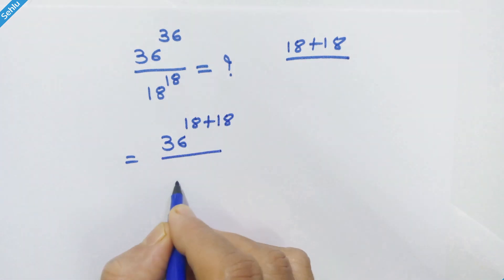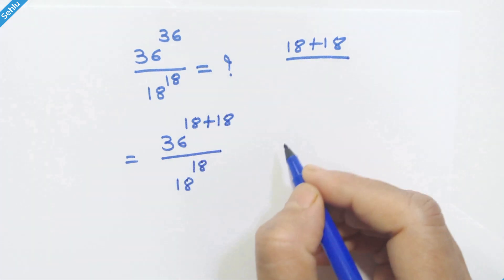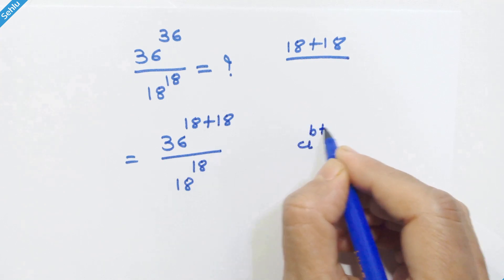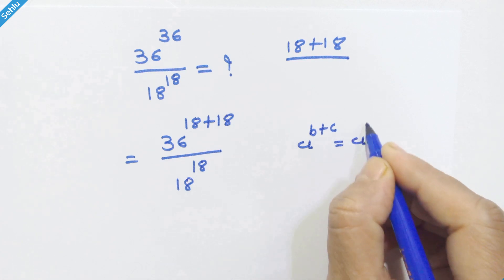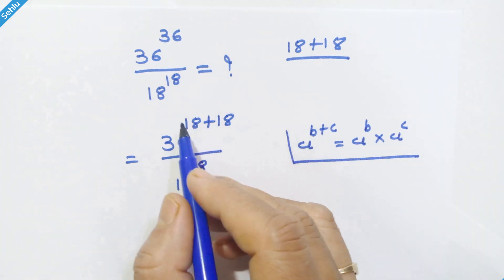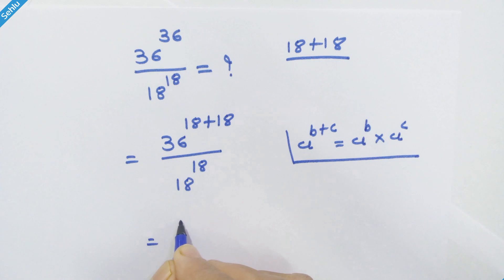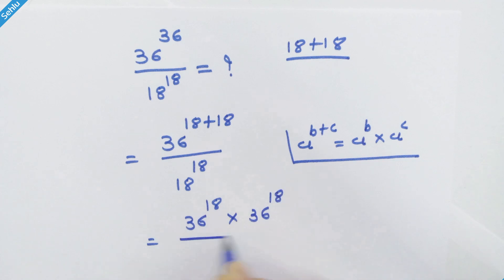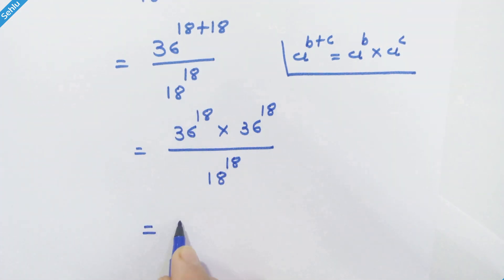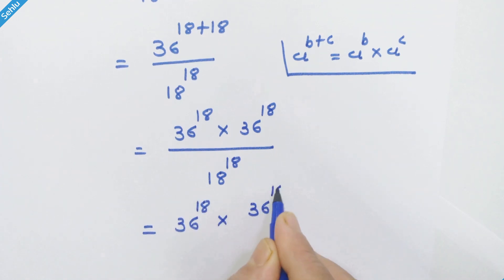Now let's recall this rule: if we have a raised to b plus c, then it can be written as a raised to b into a raised to c. Applying this rule here, we have 36 raised to 18 into 36 raised to 18 over 18 raised to 18.